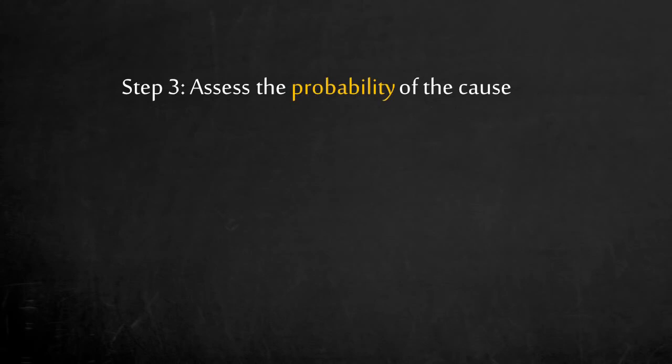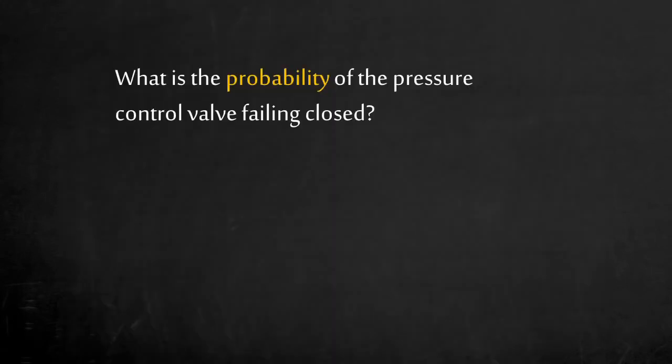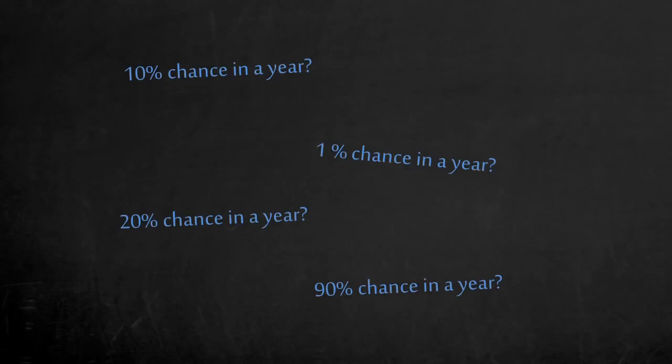Step 3: Assess the probability of the pressure control valve failing closed without safeguards. The probability includes all possible root causes such as logic controller or sensor output error. Based on different operating and engineering experience there may be different opinions — is it a 10% chance in a year, 1% chance, 20%, or maybe 90% chance in a year? The HAZOP team needs to reach a consensus.